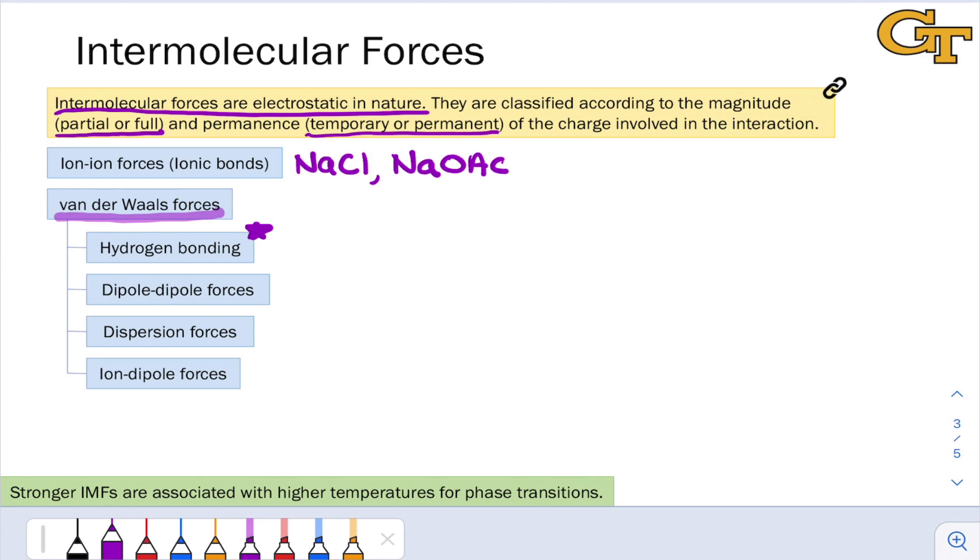Speaking of dipole-dipole forces, these tend to be a little bit weaker than hydrogen bonds because of their lack of a covalent component. And these are just interactions between partial, positive, and negative charges in molecules with a permanent dipole. So we have permanent partial positive and permanent partial negative involved in dipole-dipole forces.